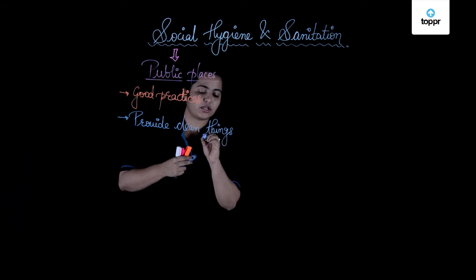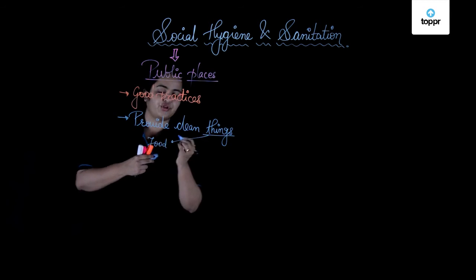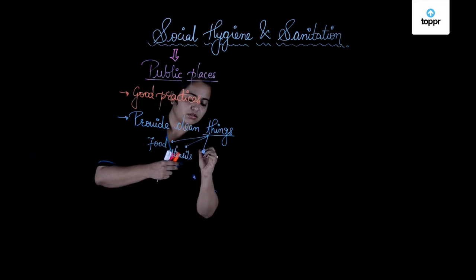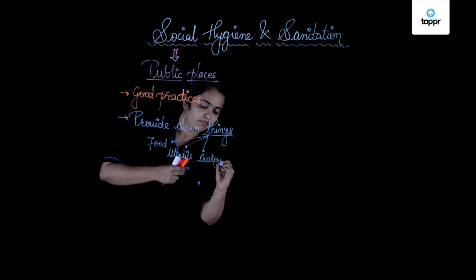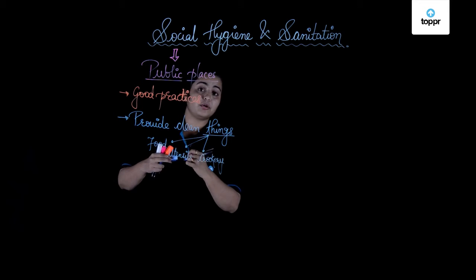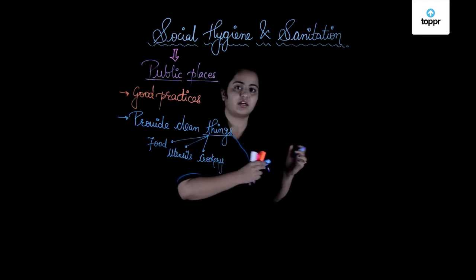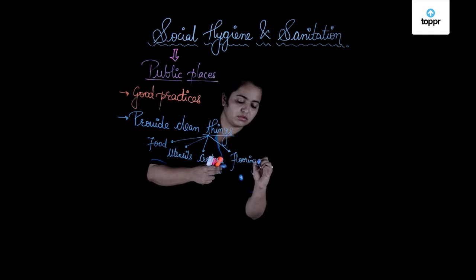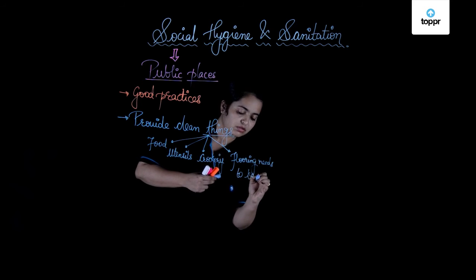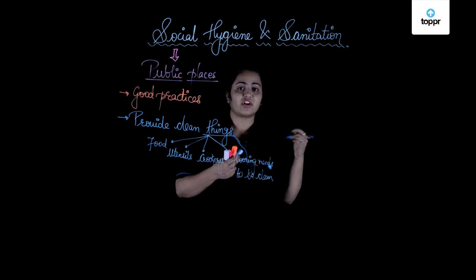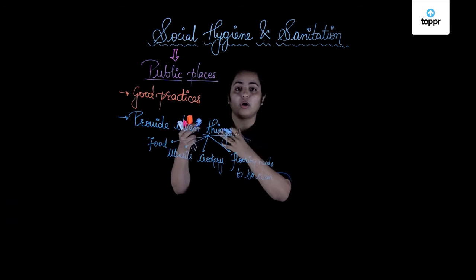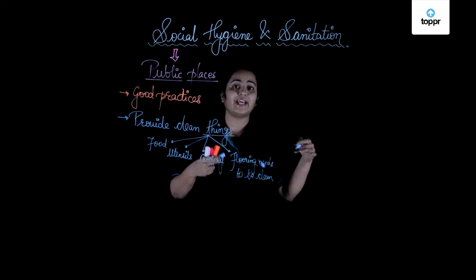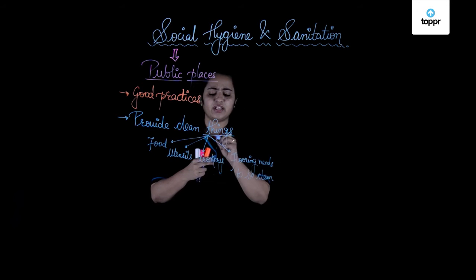What kinds of clean things are we talking about? These things include clean food. If you talk about food places, clean utensils and crockeries — utensils being all vessels used for cooking, and crockeries being those used for serving. Also, the flooring has to be clean, because there will be many kinds of flies or other insects roaming around which may contaminate the food especially. So food, utensils, crockery — everything has to be maintained.